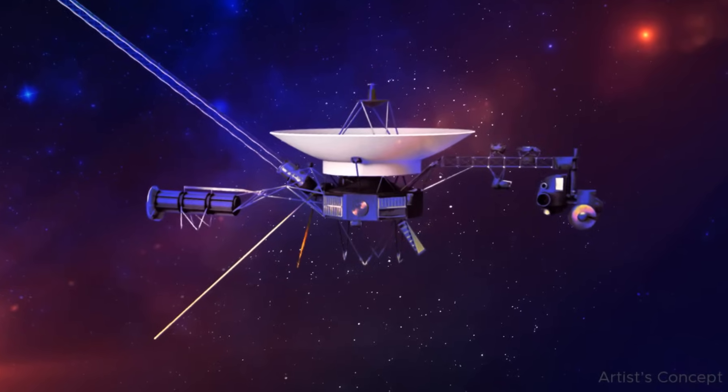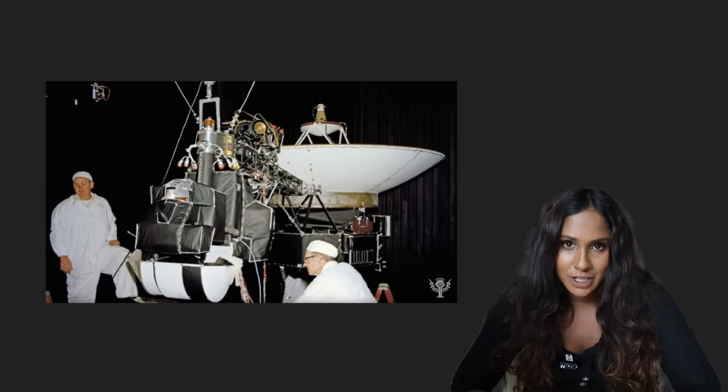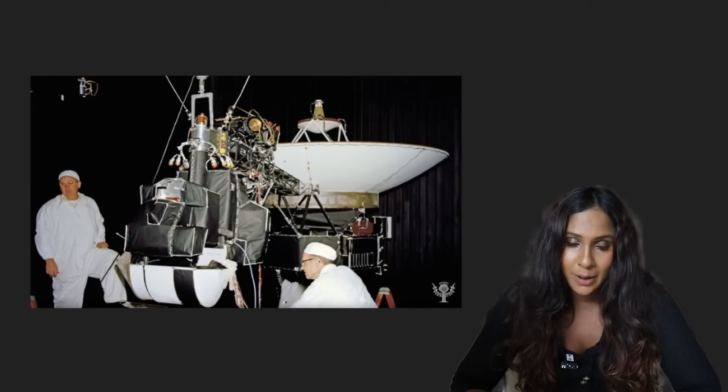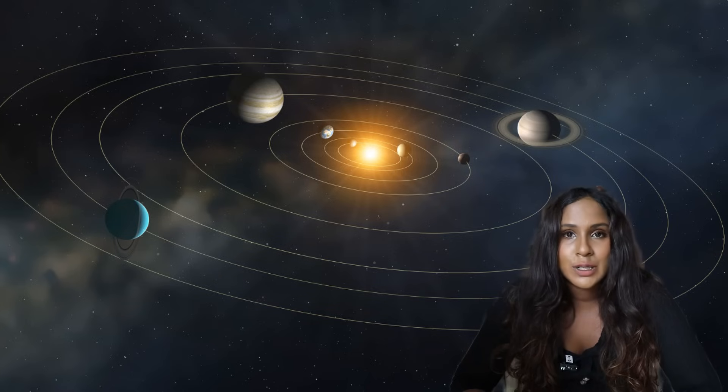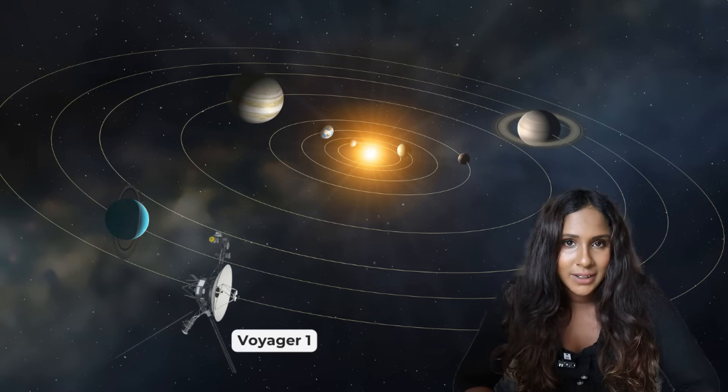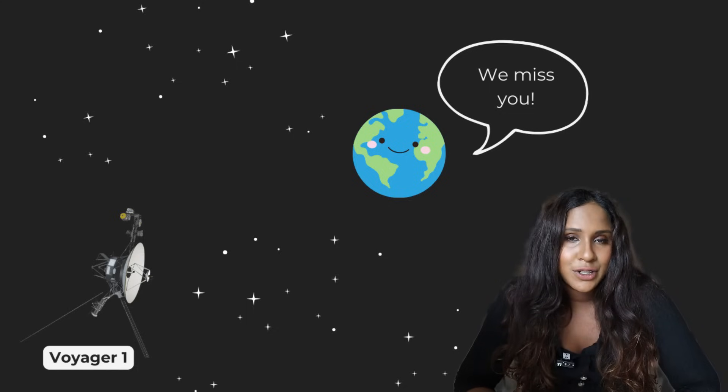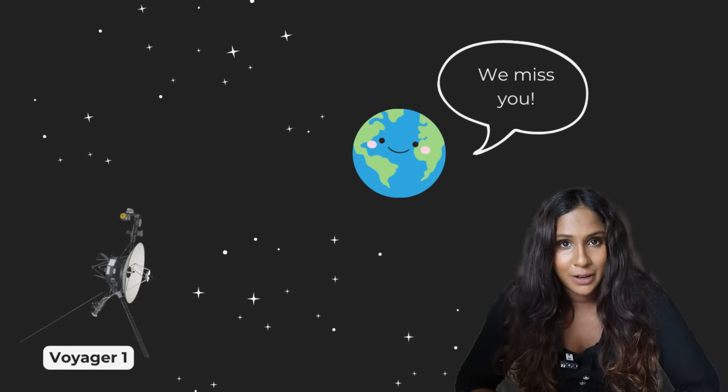This is Voyager 1, a spacecraft that has been drifting through space since 1977. NASA launched it as part of the Voyager program, initially designed to explore the outer planets of our solar system. But Voyager 1, it kept going.